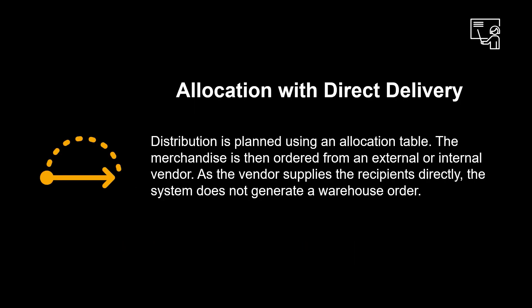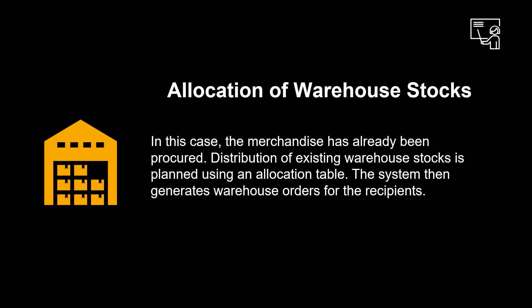Merchandise distribution also contains two less common process variants not covered in this series. The first is allocation with direct delivery — third-party processing — where distribution is planned using an allocation table, and the merchandise is ordered from an external or internal vendor. As the vendor supplies the recipients directly, the system does not generate a warehouse order. In addition, there is allocation of warehouse stocks, where the merchandise has already been procured and the distribution of existing warehouse stocks is planned using an allocation table. The system then generates warehouse orders for the recipients.